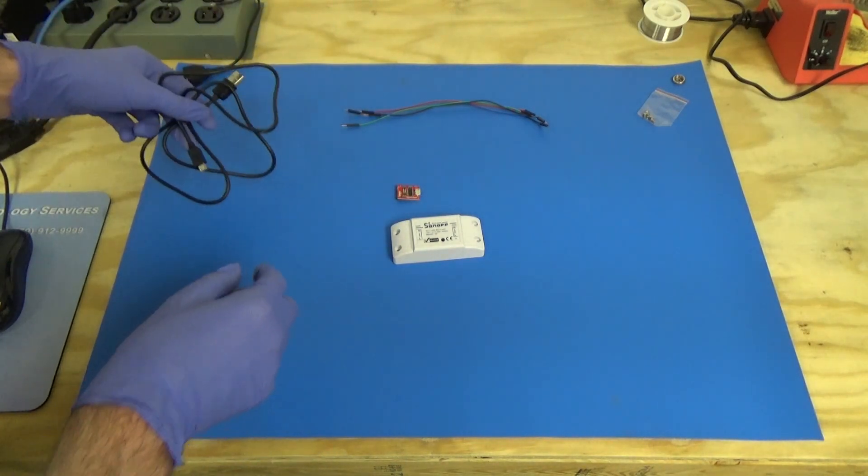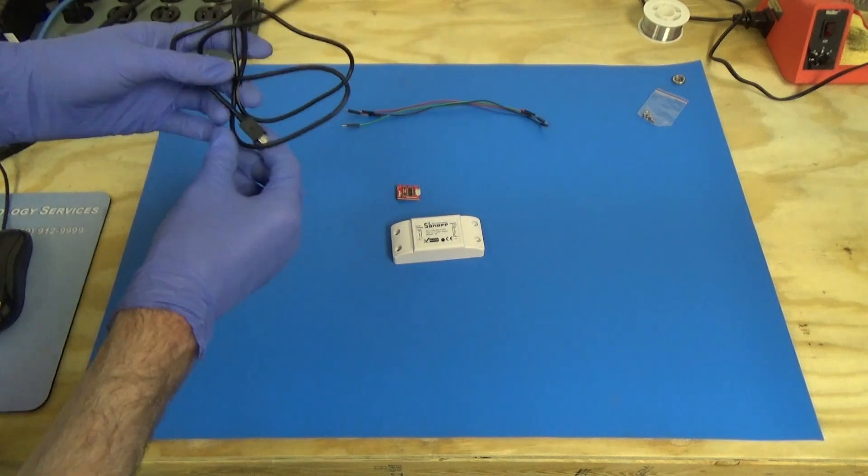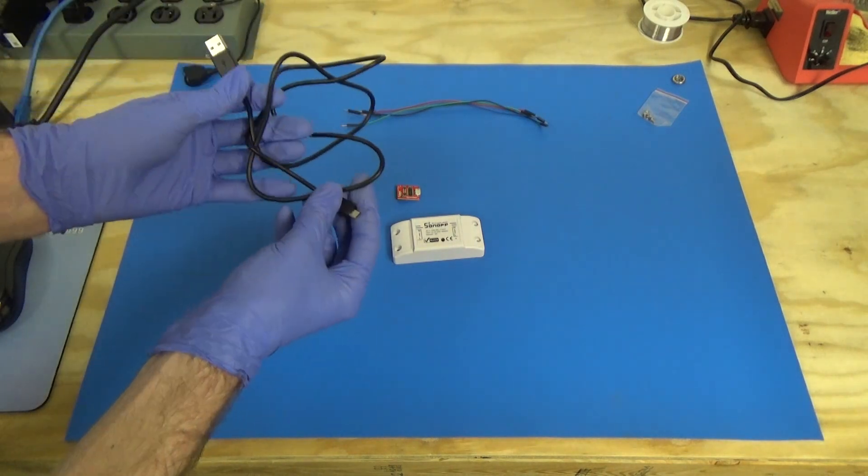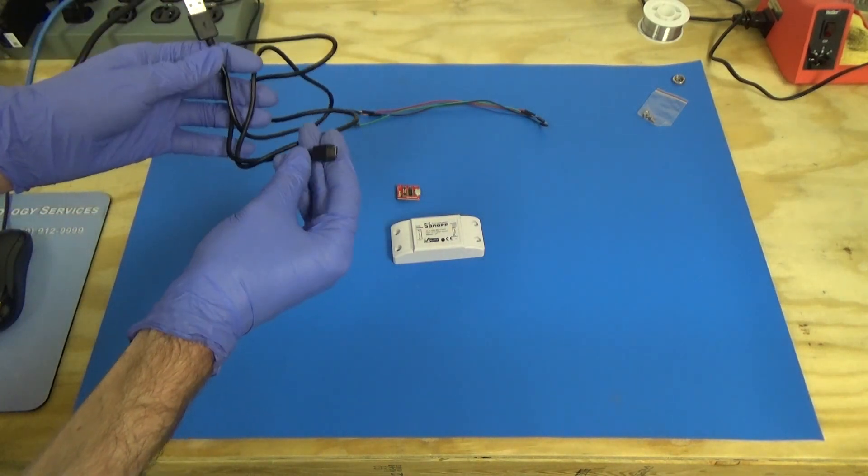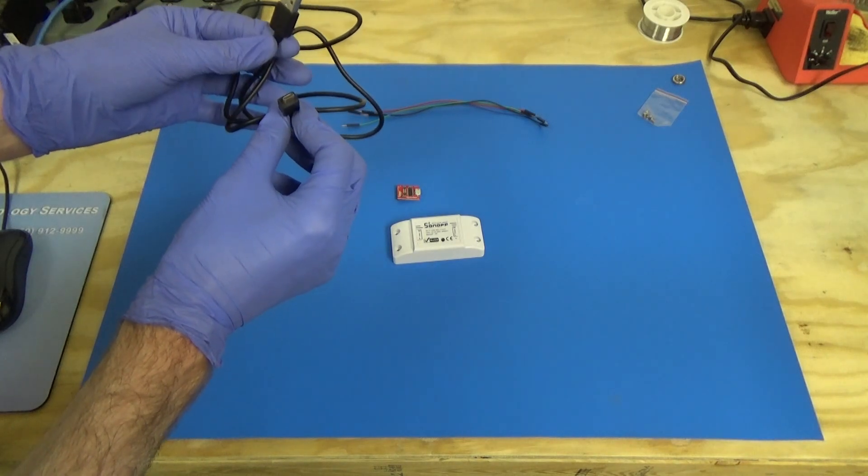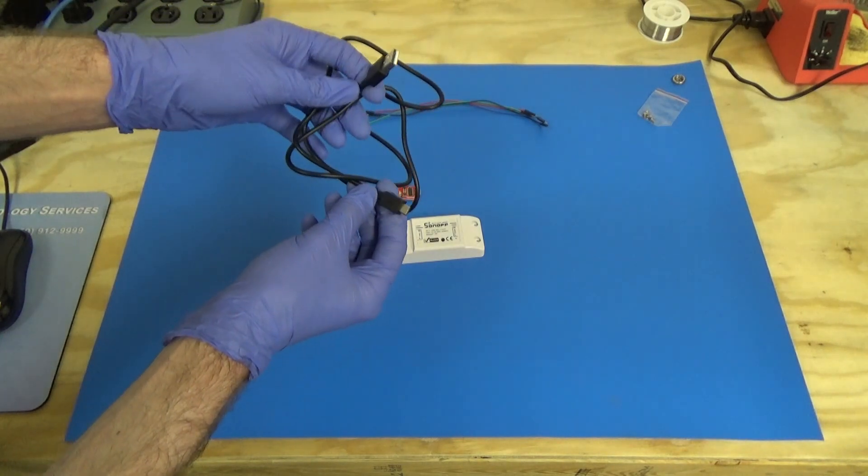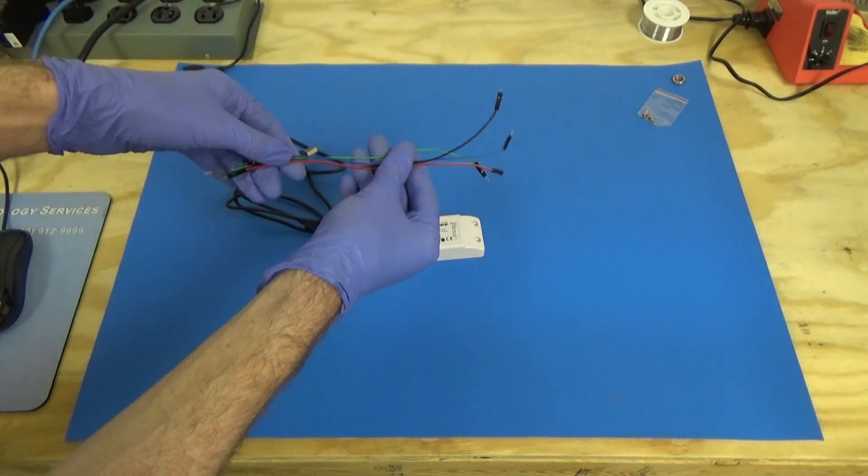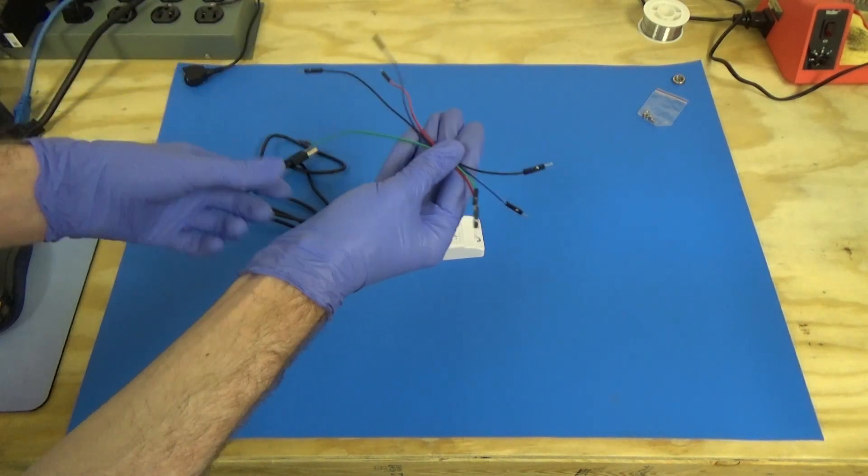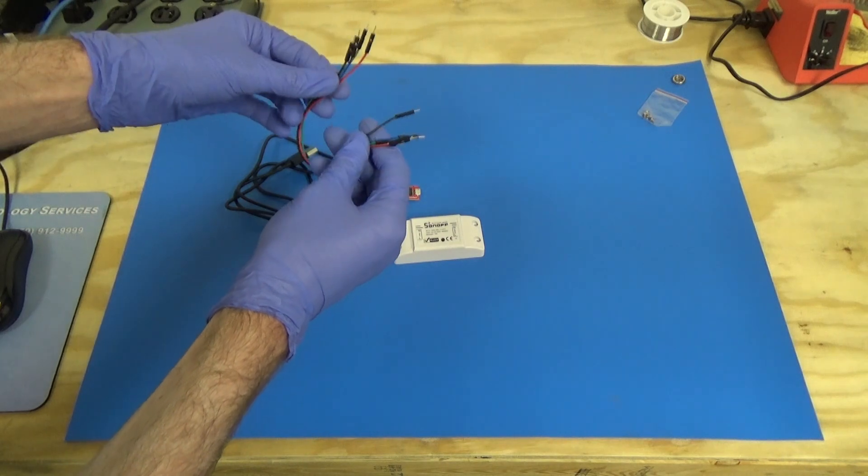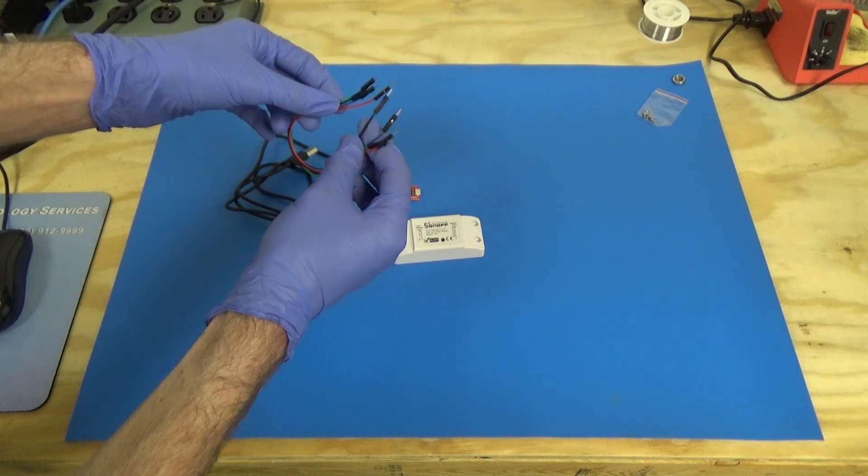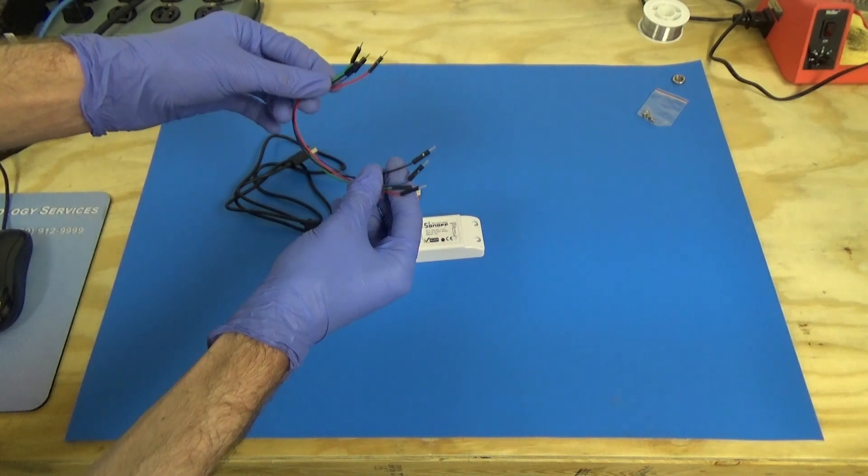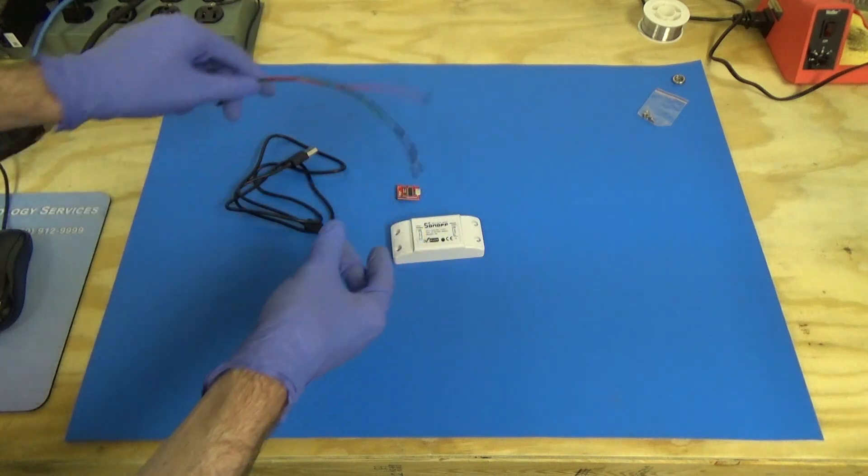So next, depending on what adapter you get, you may need some sort of cable to connect it to the computer. In this case it's a micro USB to USB-A cable that we're going to be using. And then you need four jumper wires. Typical for use on a breadboard. This kind has the male end on both sides. That's what we're going to be using for this project.